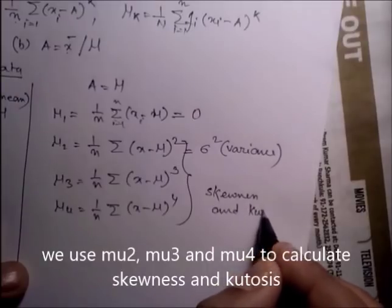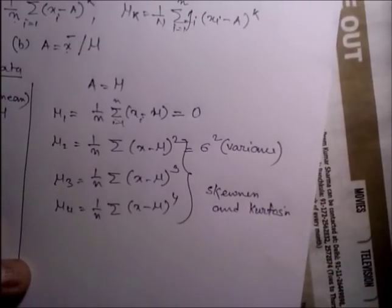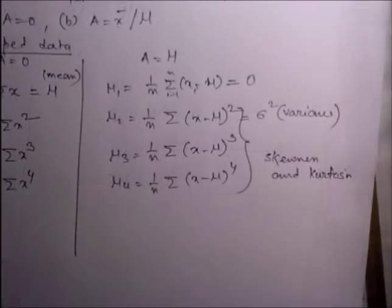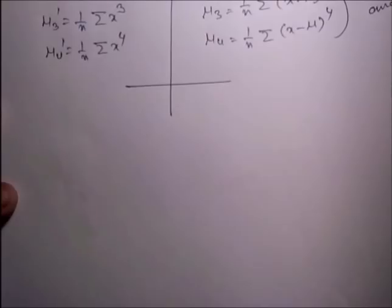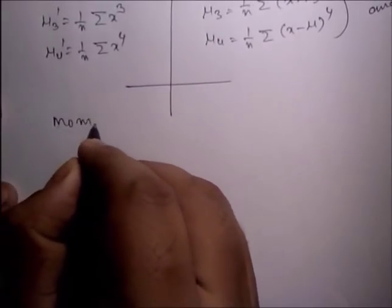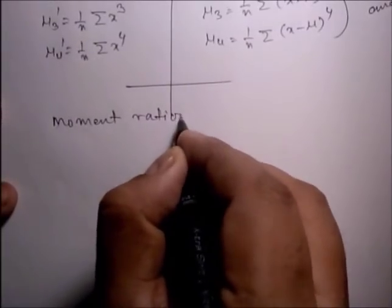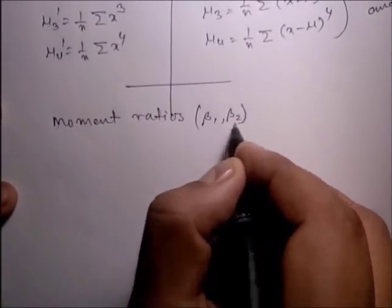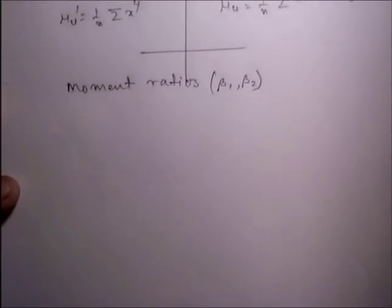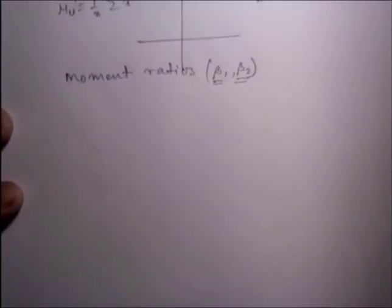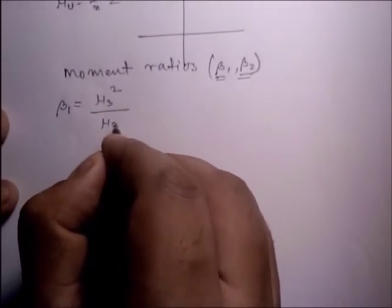We use mu_1, mu_2, and mu_3 for the moment ratios. Two moment ratios are there: beta_1 and beta_2. Ratios in between the moments are called moment ratios. Through moment ratios, we can measure the skewness and kurtosis of the distribution.